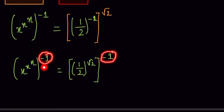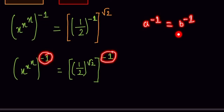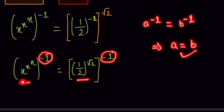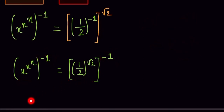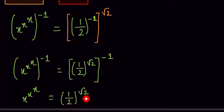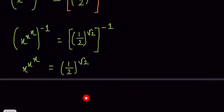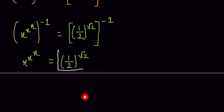Now we notice both sides have the power minus 1. According to the power rule: if a^(−1) = b^(−1), then a = b. So we equate the bases: x^(x^x) = (1/2)^(√2).